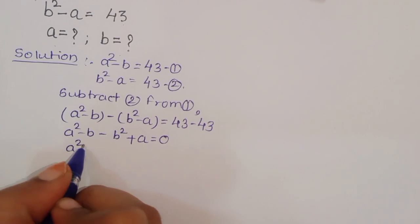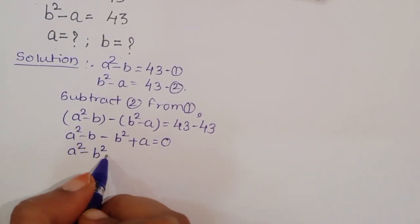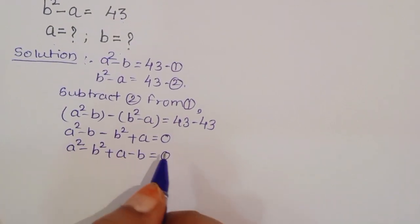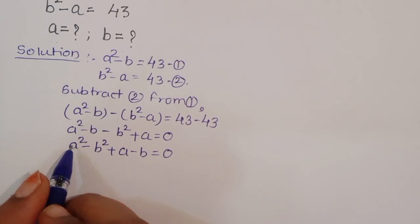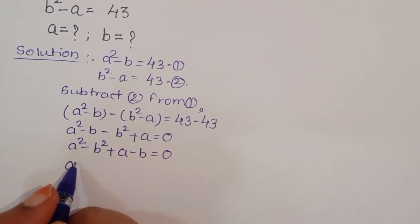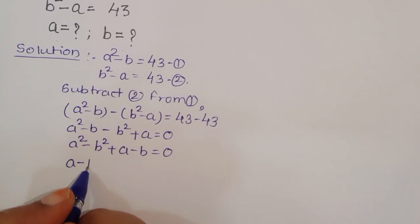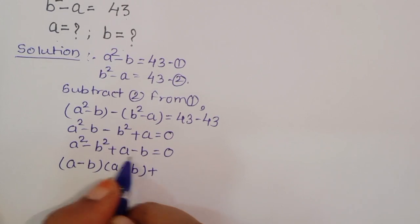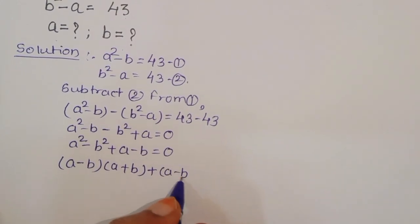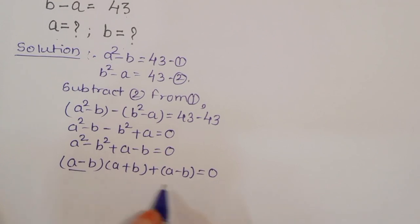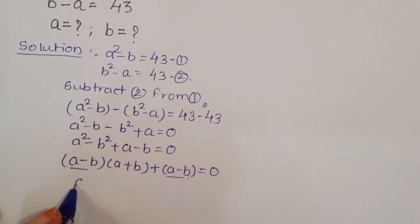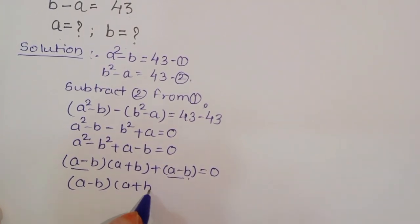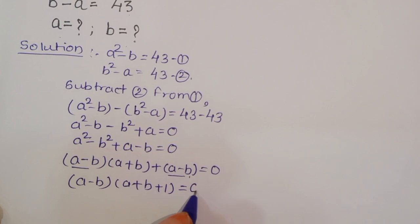We can write a squared minus b squared plus a minus b is equal to 0. Using the difference of squares formula, a squared minus b squared equals (a minus b)(a plus b). So we get (a minus b)(a plus b) plus (a minus b) is equal to 0. Taking (a minus b) as a common factor: (a minus b)(a plus b plus 1) is equal to 0.